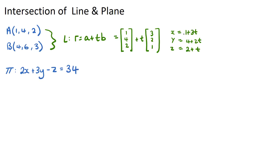Now what we can do is substitute this x, y, and z in terms of t into our plane equation. So what we're going to get is 2 times (1 plus 3t) plus 3 times (4 plus 2t) minus (2 plus t) equals 34.